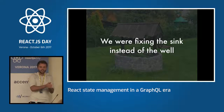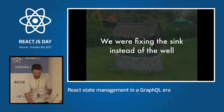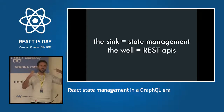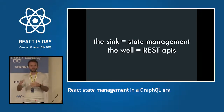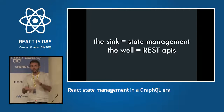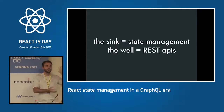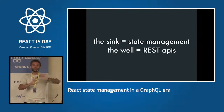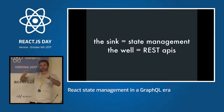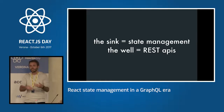The problem was we were fixing the sync instead of fixing the well. State management was the sync; the REST APIs were the well. We were solving state management by throwing libraries at it, but actually the problem was REST APIs weren't flexible enough — you couldn't compose whatever you needed on the front end. So you'd end up asking: do I call three REST APIs here, or do we create a new one called 'fetchTodosAndCategoriesAndWhatever'? We ended up with huge REST API names instead of fixing the root cause by replacing REST with GraphQL.